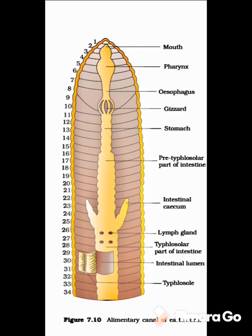In the gizzard, grinding of food material takes place. The food of earthworm is decaying leaves with soil, and grinding of this food with soil takes place in the gizzard. The gizzard leads into the stomach, which extends from segment number 9th to 14th. The stomach consists of calciferous glands, which neutralize the humic acid of humus present in the stomach.